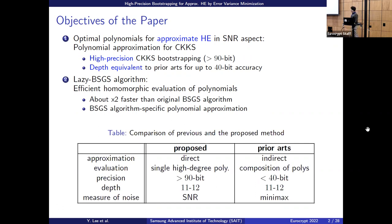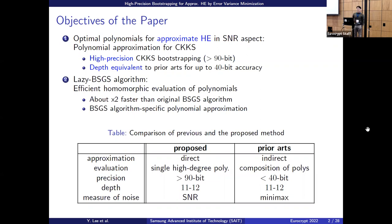This table compares prior works and our work. Prior works usually use indirect approximation — for example, using a sine function and double-angle formula, or arc-sine. However, our method is inverse: we approximate directly. Prior works operate as a composition of small polynomials, but ours requires one single high-degree polynomial. The precision is more than 90 bits, while prior works achieve up to 40 bits.